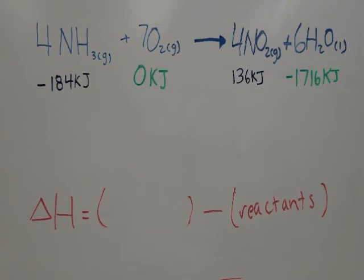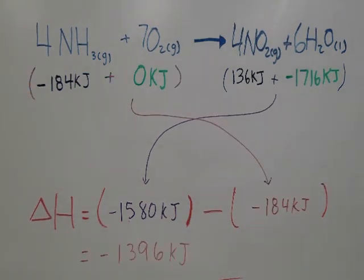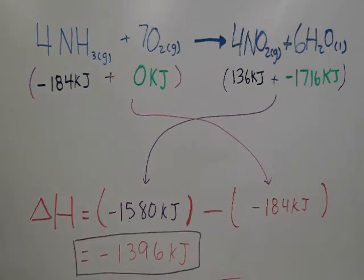We add the values for the product and plug them in here. We do the same for the reactants and plug them in here. Now, solve the equation. We get delta H to be negative 1,396 kJ.